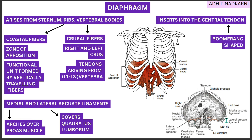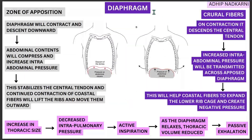Now let's look at the movement of the diaphragm — we'll keep it simple first. Simply put: the diaphragm contracts and moves downward. As it goes down, there is an increase in abdominal pressure, which stabilizes the central tendon of the diaphragm and allows the ribcage to move outward. This creates negative pressure inside, and air moves from outside high pressure to inside low pressure.